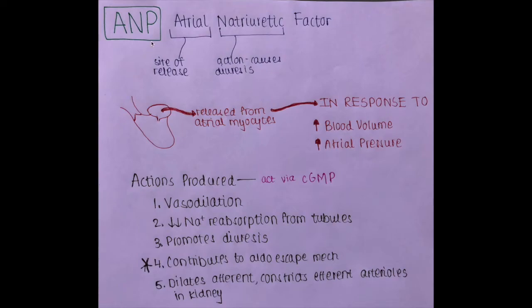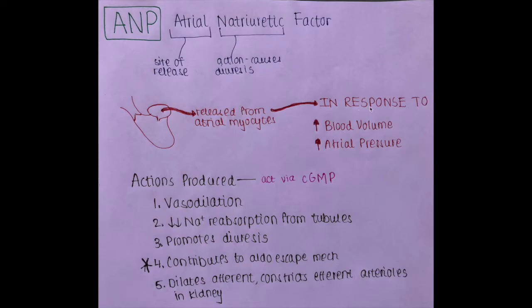ANP — atrial natriuretic peptide, or atrial natriuretic factor. The name itself suggests its action: 'atrial' meaning it is released from the atria, and 'natriuretic' meaning it causes diuresis. Whenever there is an increase in blood volume and increase in atrial pressure, the atrium releases ANF or ANP from its atrial myocytes.